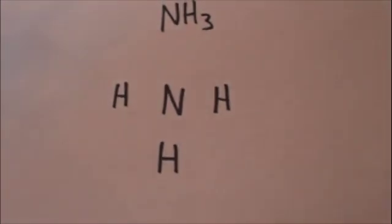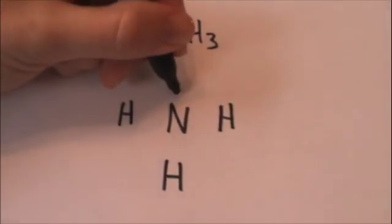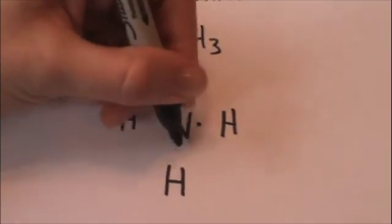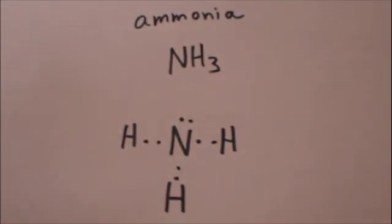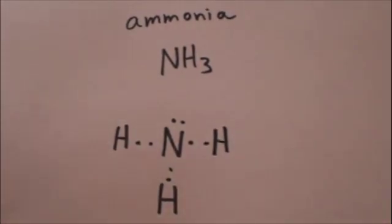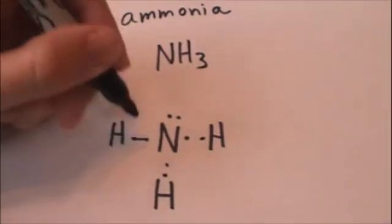And now let's fill in the valence electrons. Nitrogen is in group 5A, so there's one, two, three, four, five valence electrons. Hydrogen's in group 1A, so it has one valence electron. And it becomes pretty apparent what's going to happen. They're going to form covalent bonds.